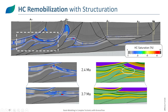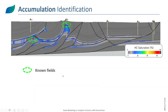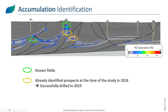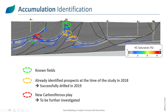In the end, from that section we were able to precisely represent known fields, validating the hydrocarbon migration model. We identified two prospects that were already under investigation and validated with the model — they were drilled in 2019 after the study was done in 2018, and were successfully drilled. The model precisely predicted the type of hydrocarbons expected. We also identified a new Carboniferous play worth further investigation.